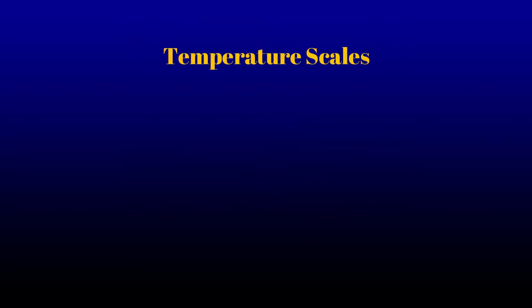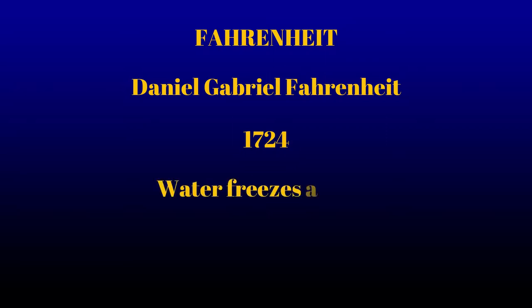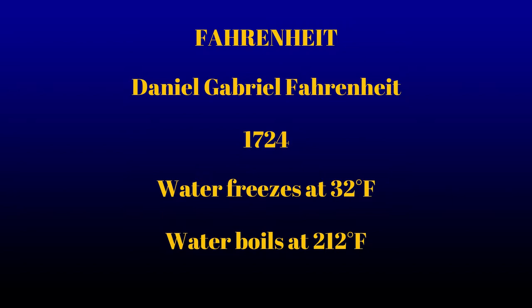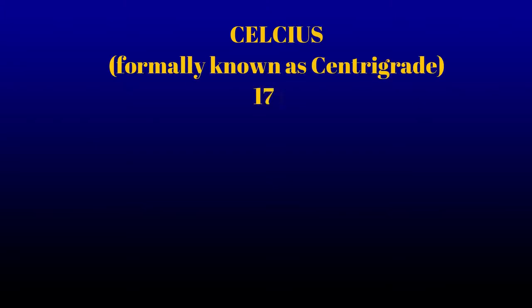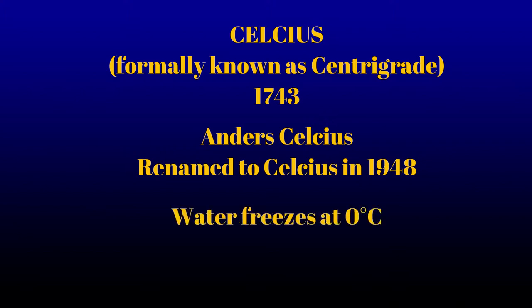Temperature scales are important to understand. Fahrenheit was proposed by physicist Daniel Gabriel Fahrenheit in 1724. At this scale, water freezes at 32 degrees Fahrenheit and boils at 212 degrees Fahrenheit at sea level. Celsius was originally called centigrade and formulated in 1743. Anders Celsius developed a scale much like it, and the scale we use today was renamed to Celsius in 1948 in his honor. In this scale, water freezes at 0 and water boils at 100.